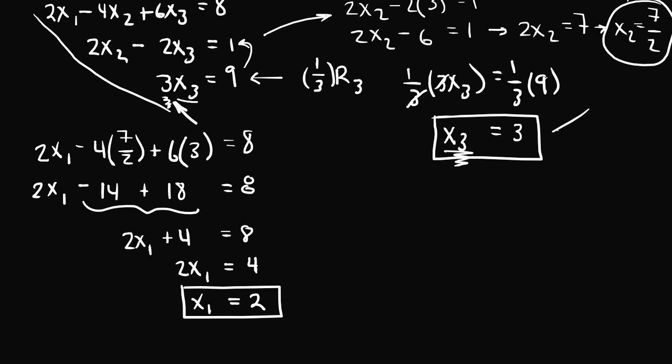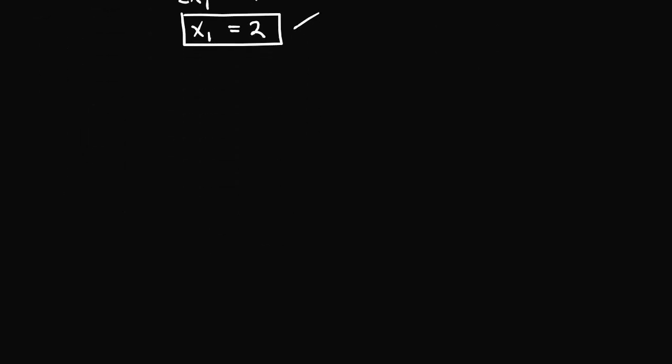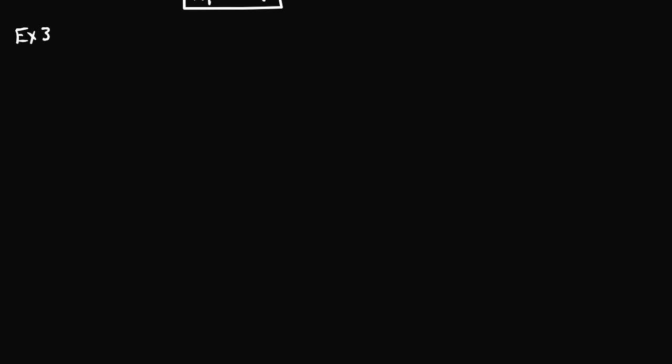The solution set for this system of linear equations is x1 equals two, x2 equals seven over two, and x3 equals three. Now let's move on to our last example, which is going to be the most challenging. In example three we're going to have to use a parametric representation of a solution set.